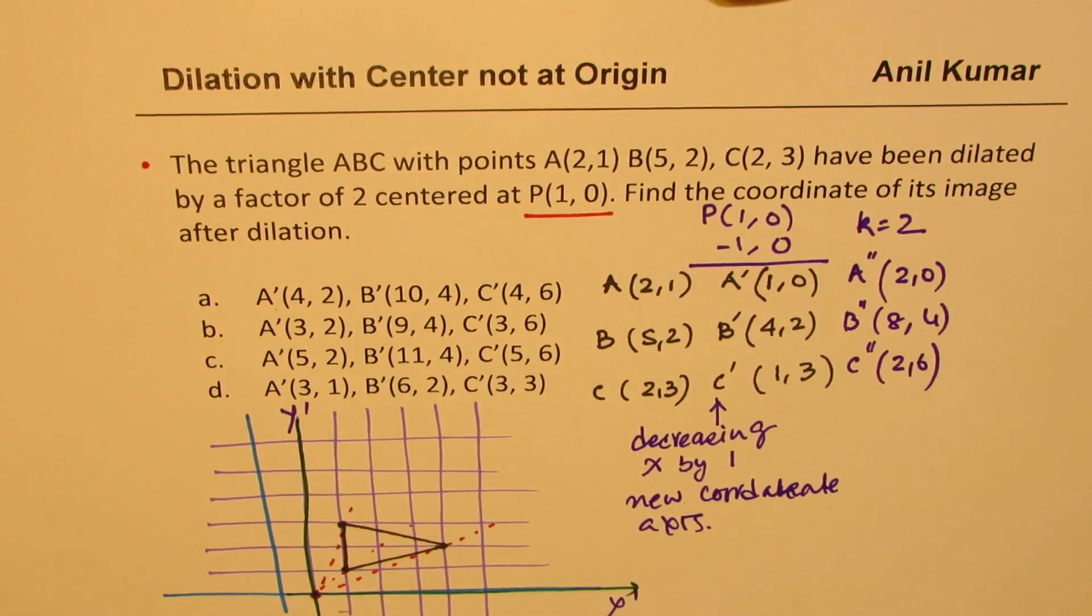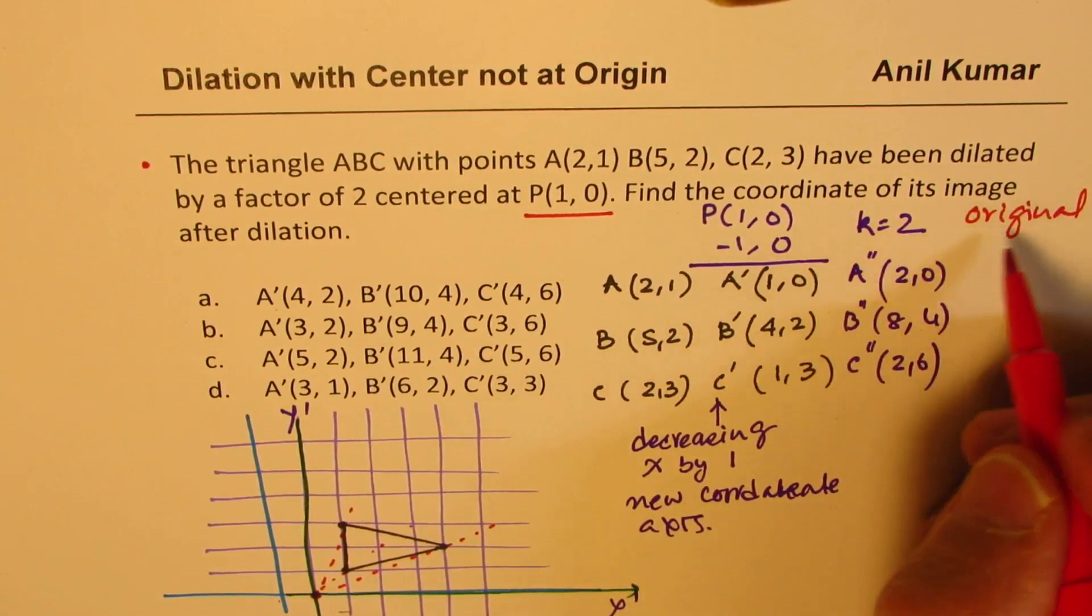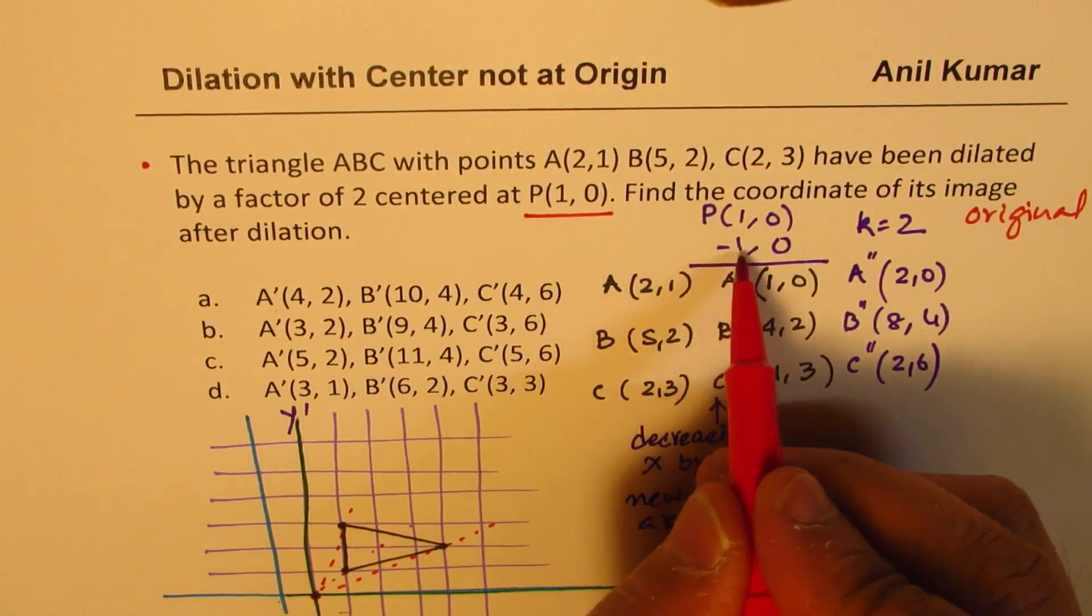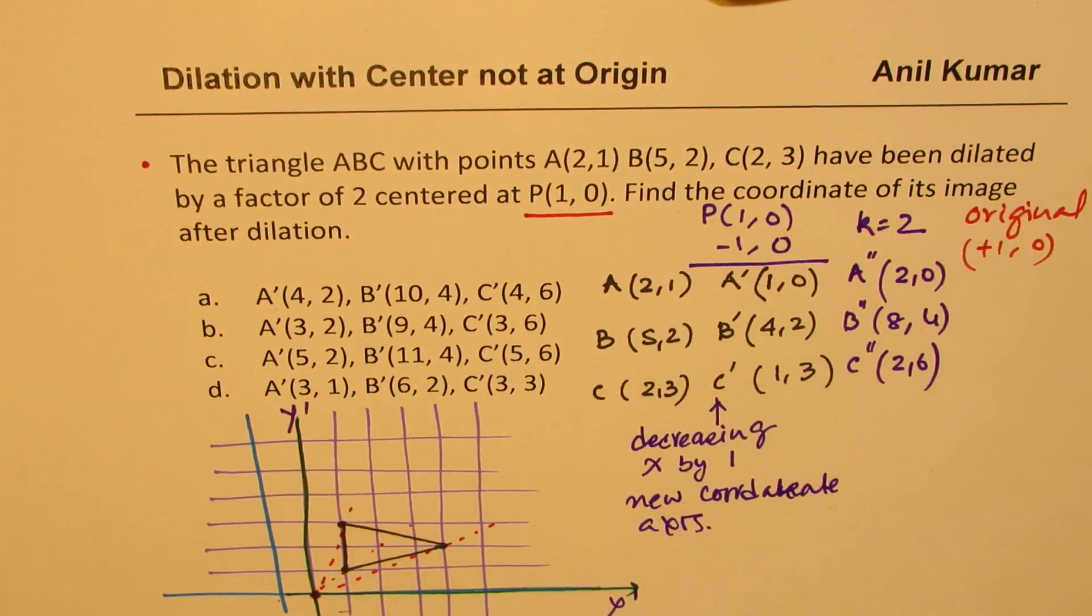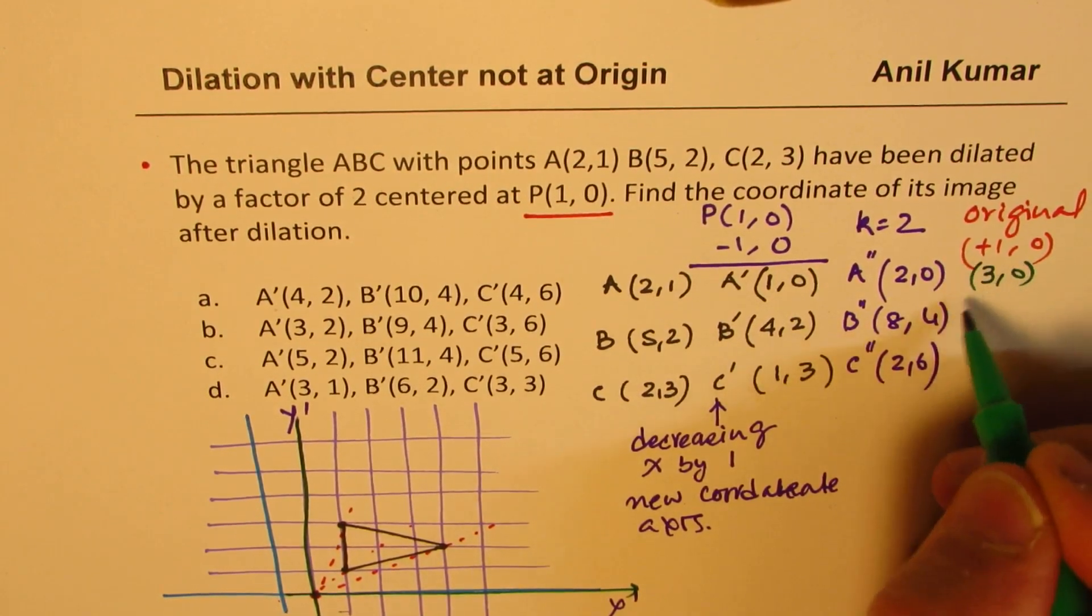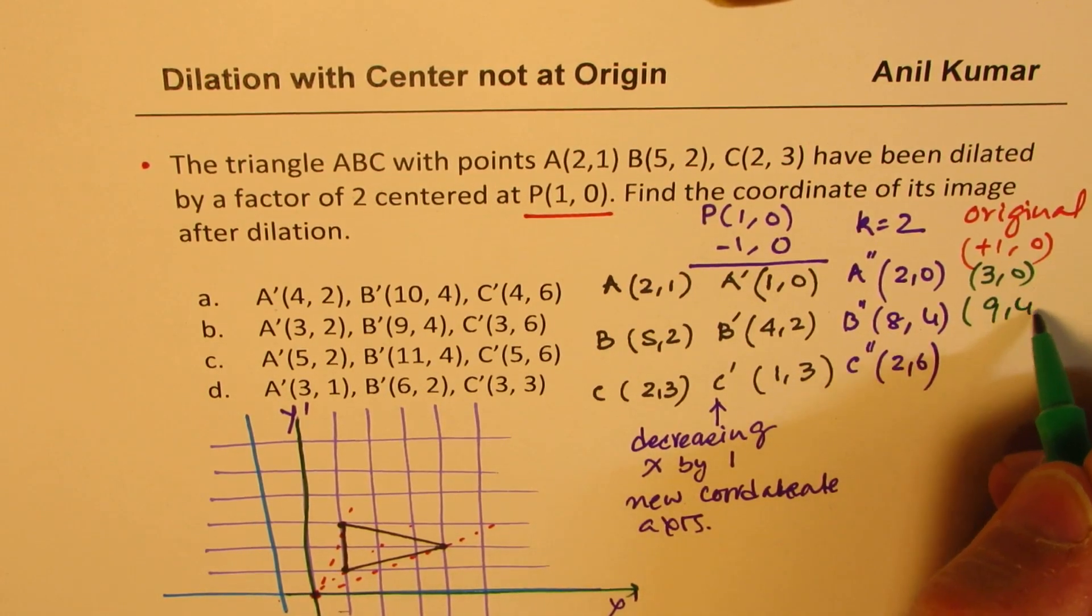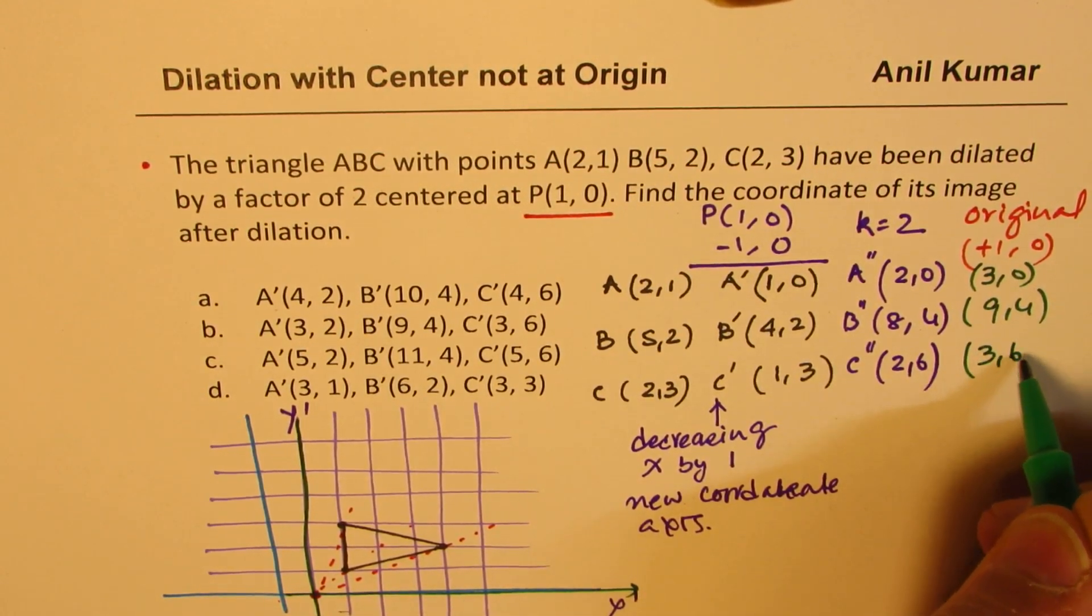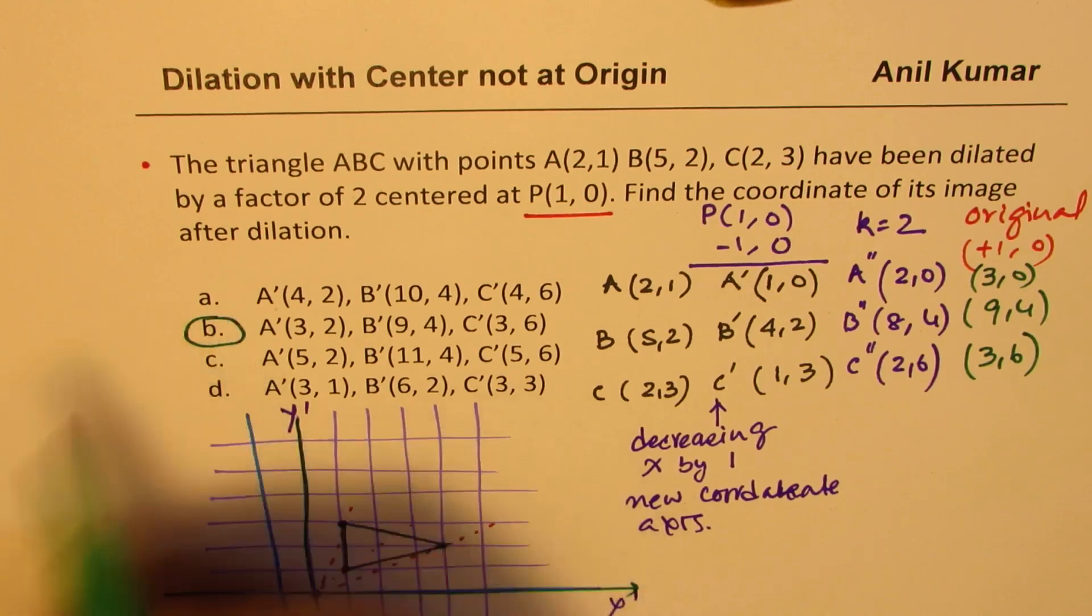And now what we need to do is report these numbers with our original scale. So we'll go back to the original system. So original system means we actually deducted minus 1. Now we'll add 1 and 0 to our new points. So when you add 1 and 0 to your new points, what do you get? You get 2 plus 1 as 3. Y value is same. And then you're adding 1 to 8, you get (9,4). 1 to 2, you get (3,6). And that is your actual image. And that matches with option B for you. Does it make sense to you?